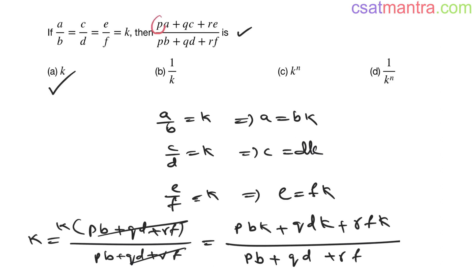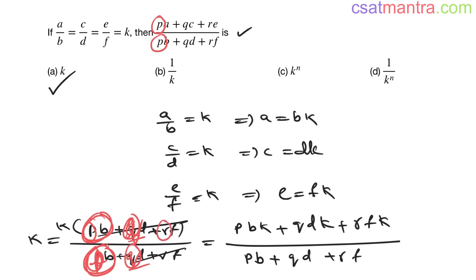You need to have the same multiplier in numerator and denominator. If you have l instead of p, you cannot cancel — in the numerator you have pb but in the denominator lb, and only if it is p can those terms cancel. Similarly, if you have l·d and q·d, they are not equal; you need q in both positions.